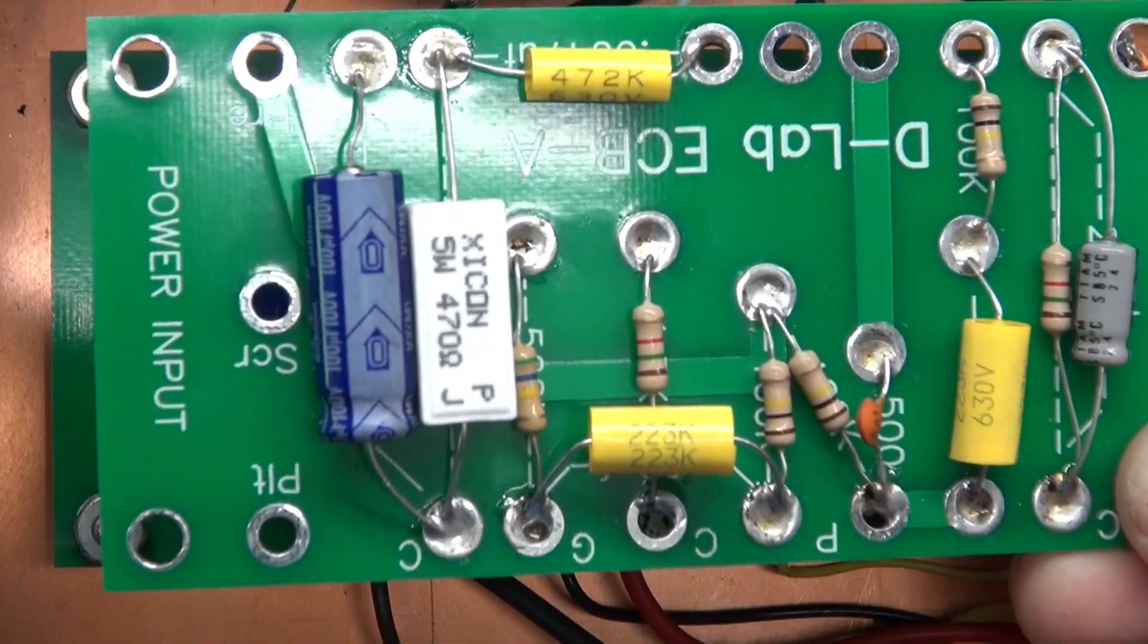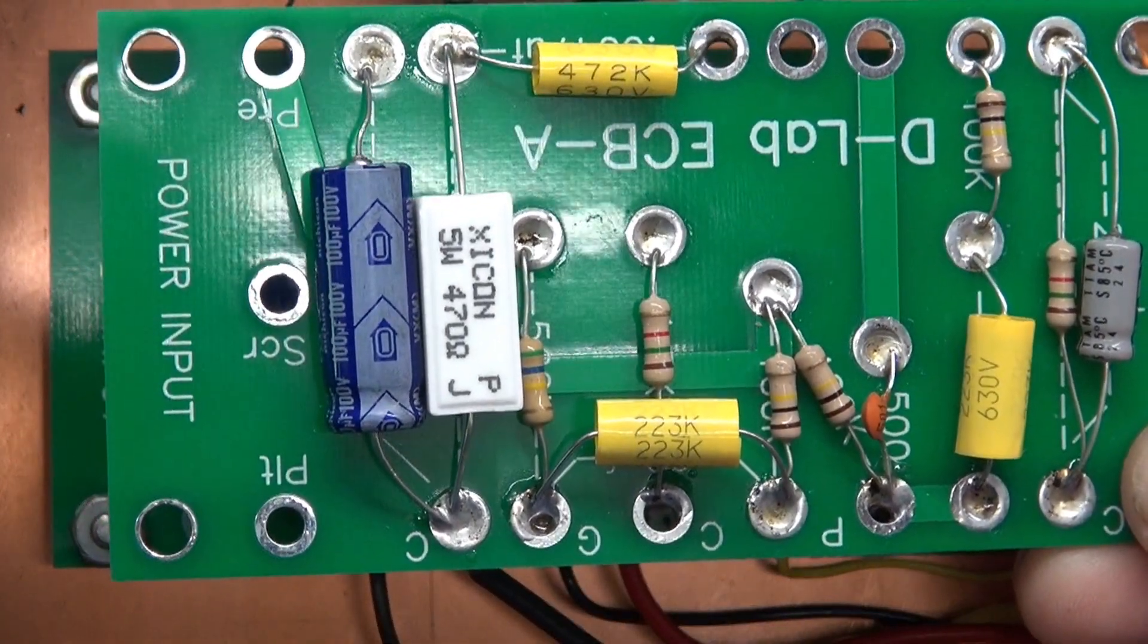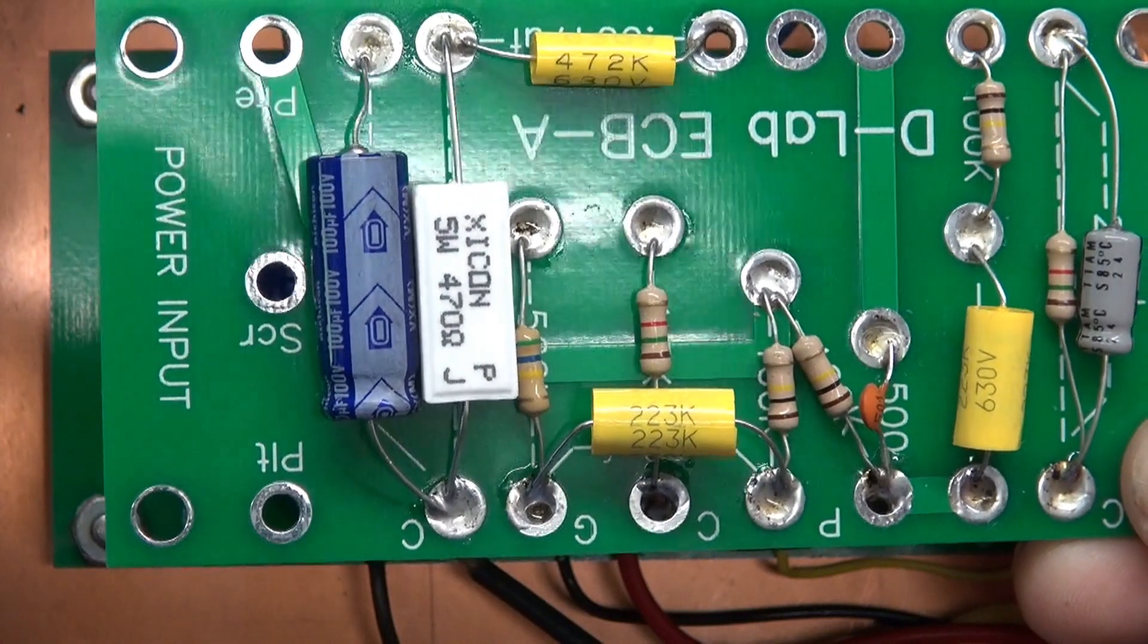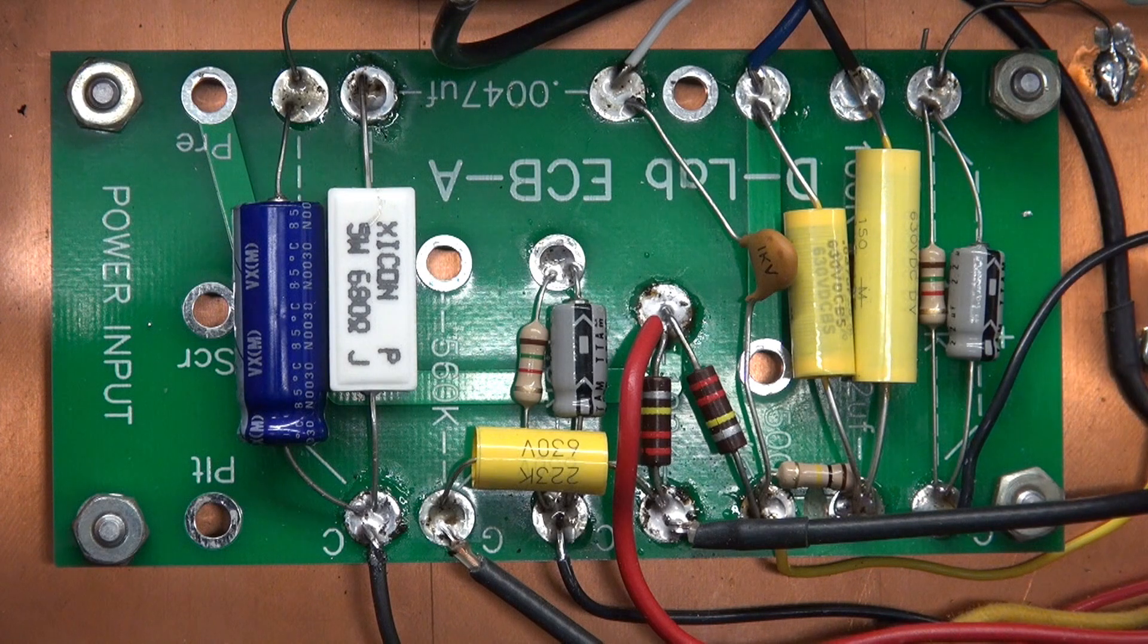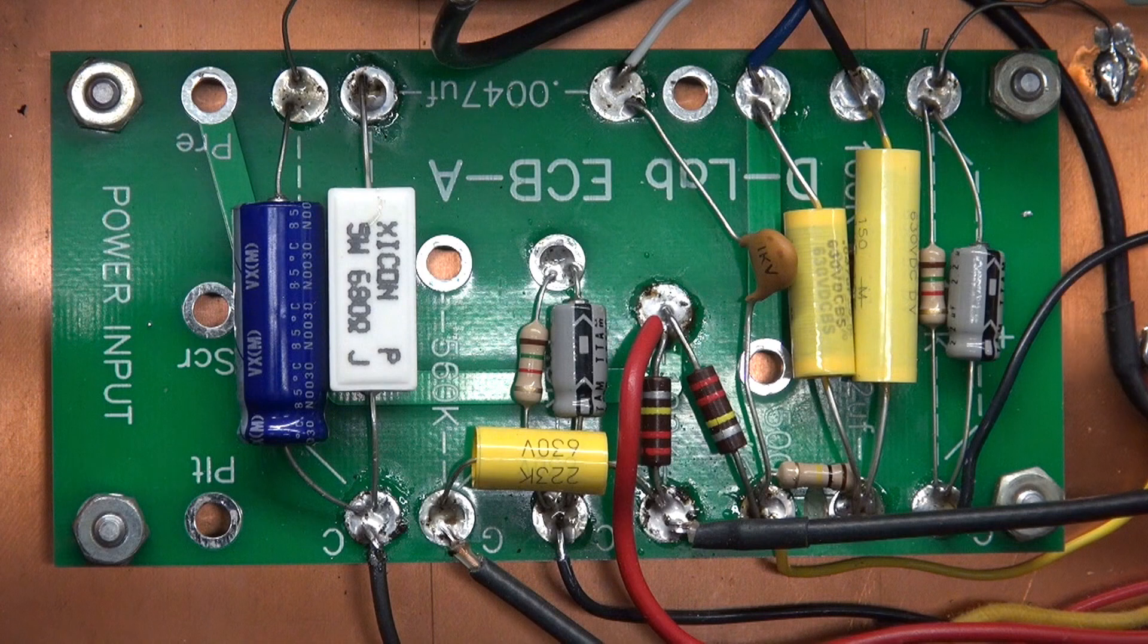So this is the stock D-Lab ECBA board with a Princeton 5F2 tone circuit. And this is the after modified version for the Princeton AA-1164 circuit featuring treble and base pots.